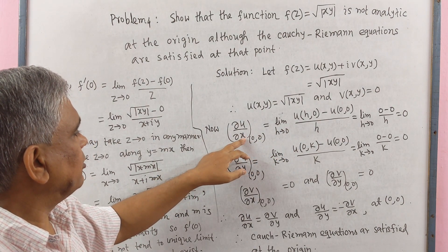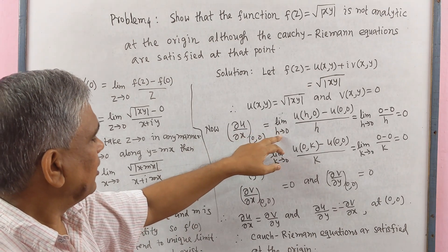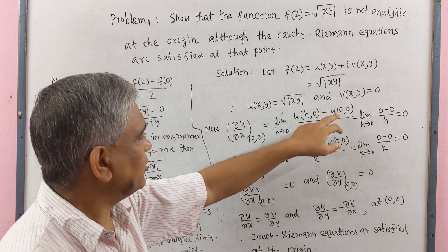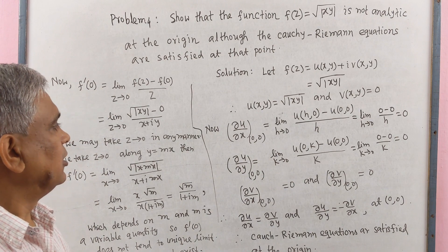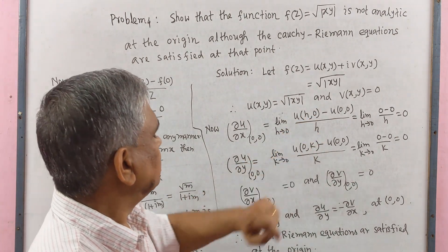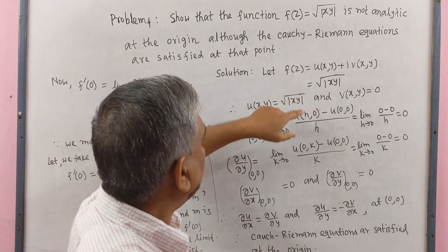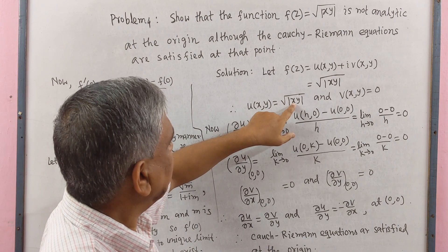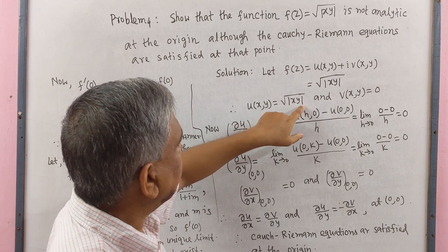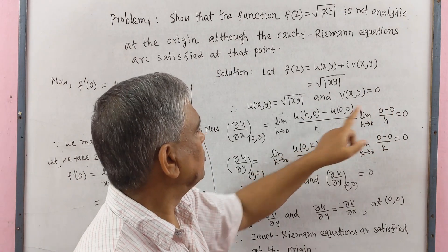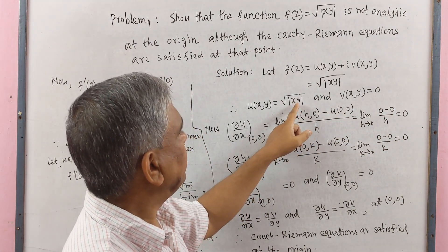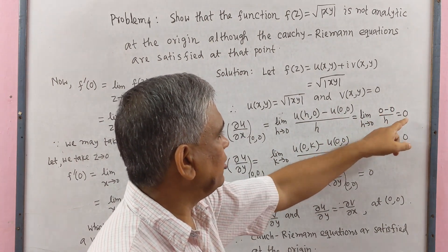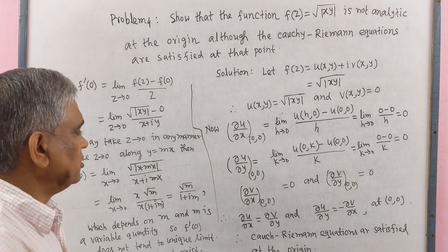We compute ∂u/∂x at the origin (0,0) using the limit definition: limit as h→0 of [u(h,0) − u(0,0)] / h. Here u(h,0) = √|h·0| = 0 and u(0,0) = 0. So ∂u/∂x|(0,0) = limit h→0 of 0/h = 0.